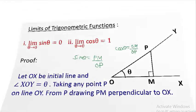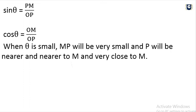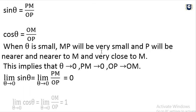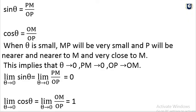Sin theta equals PM by OP, and cos theta equals OM by OP. When theta is small, MP will be very small and P will be nearer and nearer to M, and very close to M.